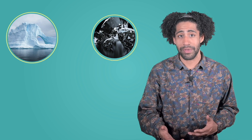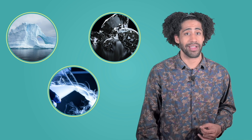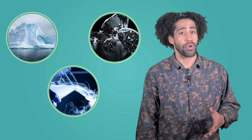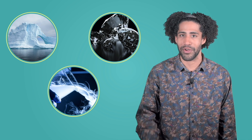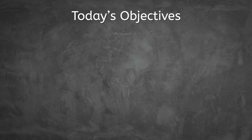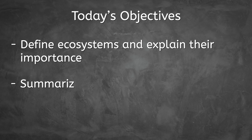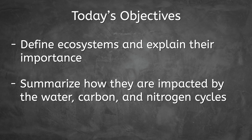What do glaciers, diamonds, and liquid nitrogen have in common? Well, aside from just looking really awesome, these things are all made out of substances that are absolutely necessary for life to exist on Earth. You're probably thinking, but Anthony, living things aren't made out of diamonds. And that might be true, but the ingredients to create diamonds exist within all of us. In today's lesson, we'll be unpacking these life-giving resources as we define ecosystems and explain how they are impacted by the water, carbon, and nitrogen cycles. Let's get into it!